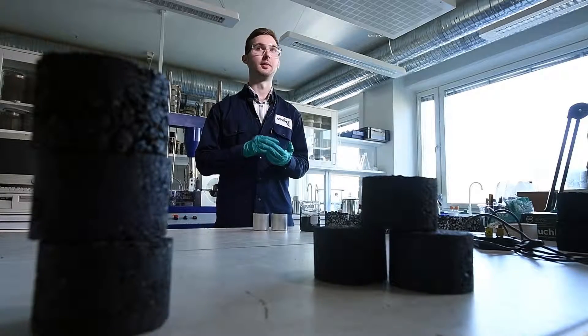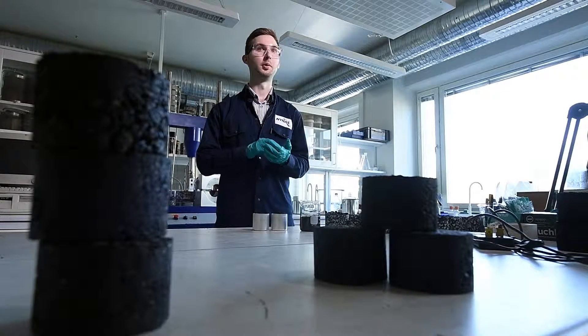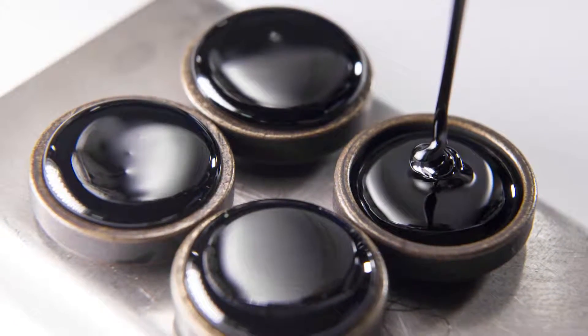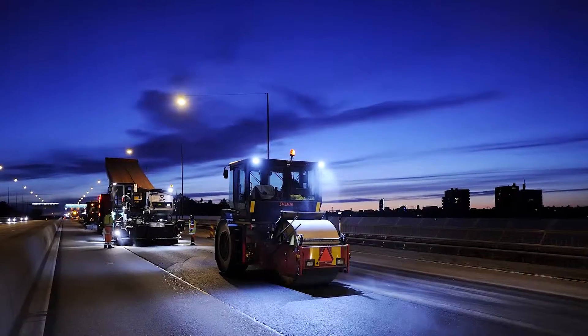Bitumen is manufactured from the vacuum distillation of crude oil, taken out as the heaviest fraction. Approximately 85% of all the bitumen is used as a binder in road laying applications.